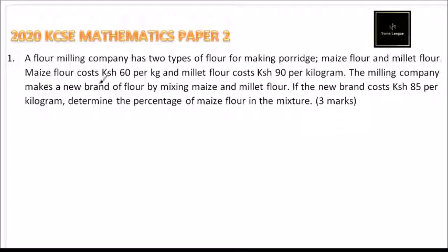Maize flour costs 60 Kenyan shillings per kg and millet costs 90 Kenyan shillings per kg. The milling company makes a new brand of flour by mixing maize and millet flour. If the new brand costs 85 Kenyan shillings per kg, determine the percentage of maize flour in the mixture.